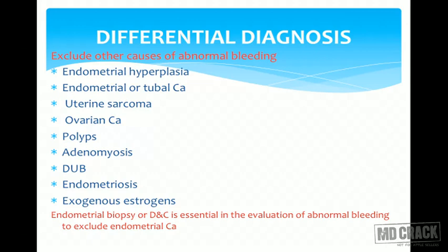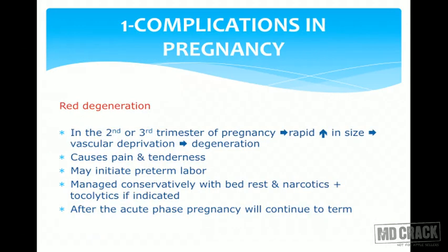The conditions we need to exclude include: endometrial hyperplasia, endometrial or tubal carcinomas, uterine sarcoma, ovarian carcinoma, polyps, adenomyosis, DUB, endometriosis, or any source of exogenous estrogen the patient is on. Endometrial biopsy or D&C (dilatation and curettage) is an essential investigation in the evaluation of abnormal bleeding to exclude endometrial carcinoma.